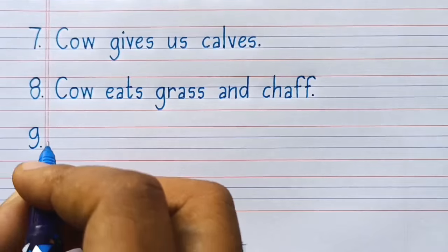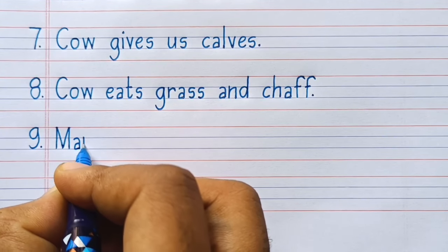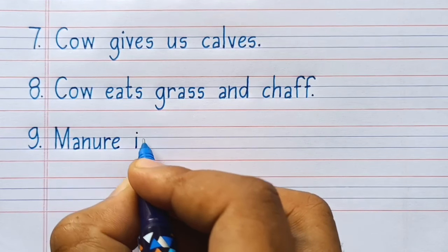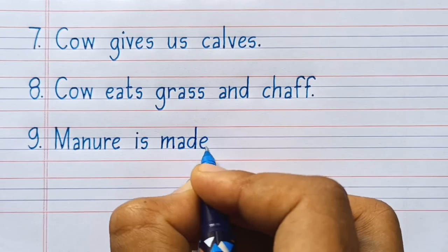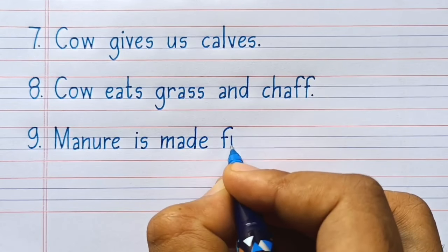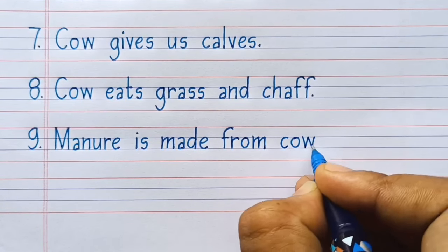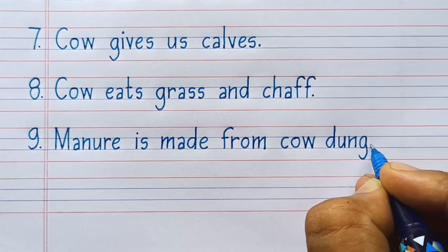Eighth line: Manure is made from cow dung.